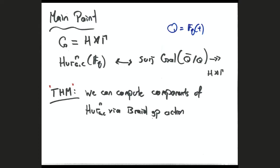In the paper, we account for that. Why do we care about components? If you want the version where you let q go to infinity — the easier version — you get a lot of information from point counting by understanding how many connected components these spaces have, what fields they're defined over, and their dimensions. For instance, if it's dimension one in the q → ∞ limit, you almost don't care what the genus is — you just care that it's dimension one and defined over F_q.